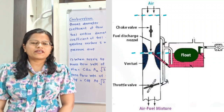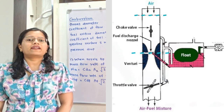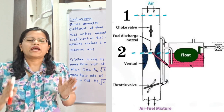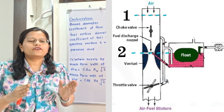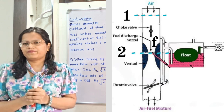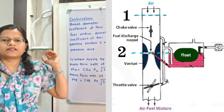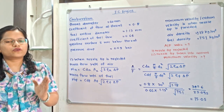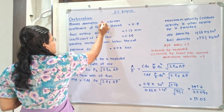This is a simple jet carburetor problem. At the air inlet we use suffix 1, at the venturi throat we use suffix 2, and at the fuel metering orifice we use suffix f. From the given data, throat diameter D2 = 20 mm.